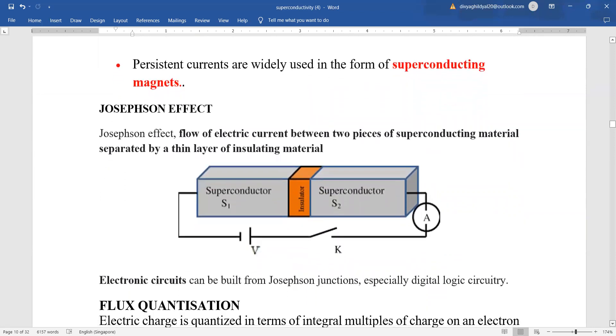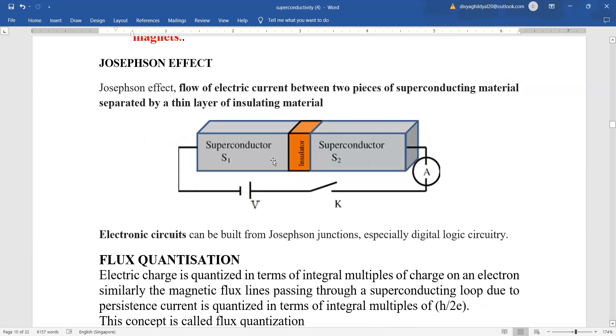What is Josephson effect? When two superconducting materials are joined with the help of a thin layer of insulating material between them, then current starts to flow. This is known as Josephson effect and electronic circuits can be built from these junctions.